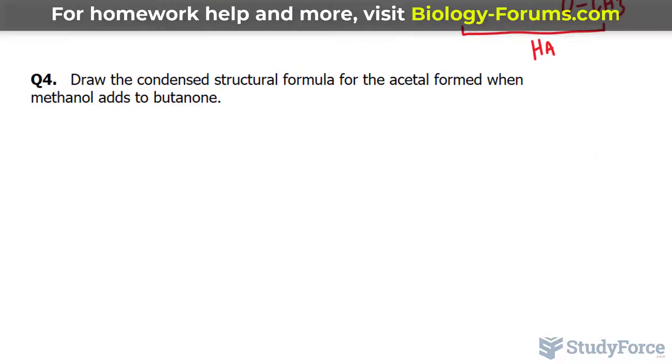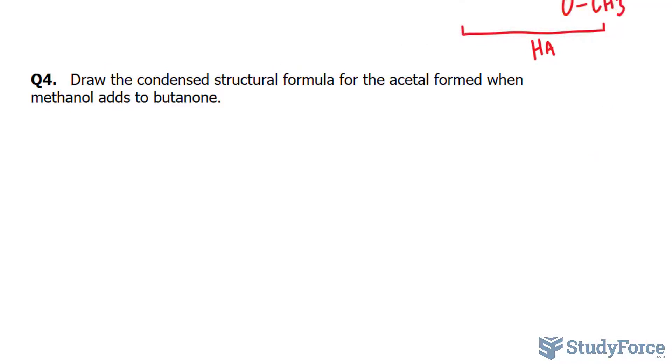Now when it comes to forming acetals, it's usually a two-step process where a hemiacetal is formed first and then an acetal second. So we'll begin by drawing out what these molecules look like, methanol and butanone. Methanol looks like this as we learned in question three.